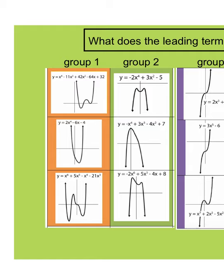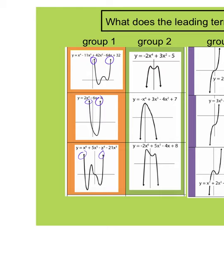In group one, when we look at where these graphs end up, the left side of the graph ends up going up, the right side ends up going up — left side up, right side up for all of those. That is a result of the leading term. The leading term here has two specific characteristics: the degree is even, and the leading coefficients — 1, 2, and 1 — are all positive. Those two factors combined lead to the idea that the graph will be going up at both ends. That's called end behavior, and that's what we see when we have an even degree and a positive coefficient.